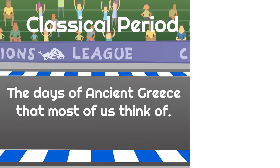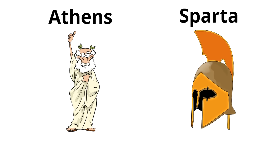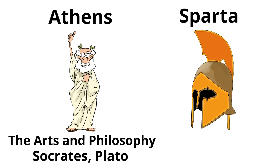The classical period was when the city-states of Athens and Sparta were at their strongest. In Athens, the arts and philosophy were so important. In fact, Socrates and Plato were from Athens — Athens was a place thriving with the arts and culture.